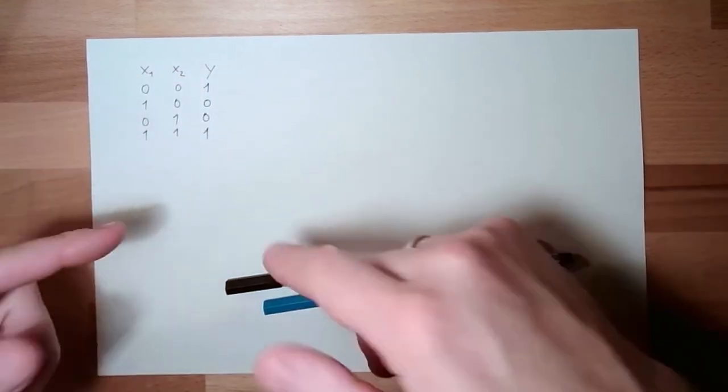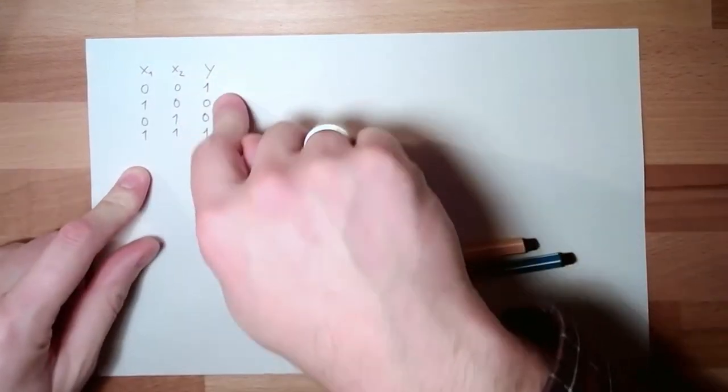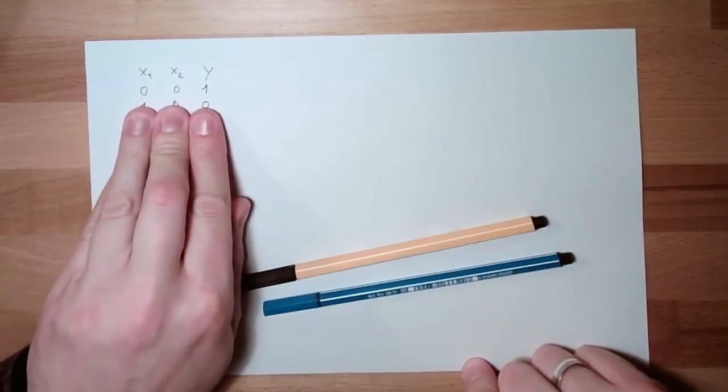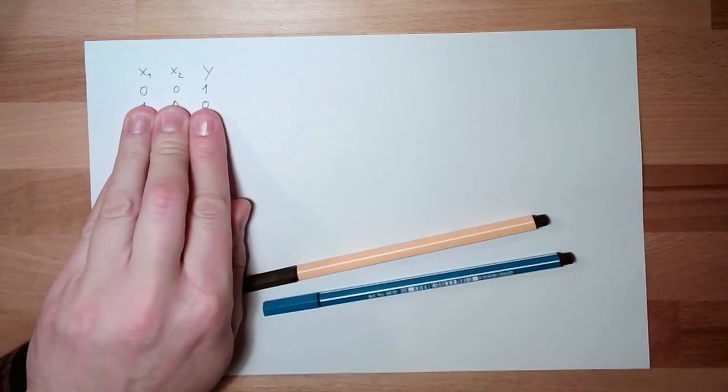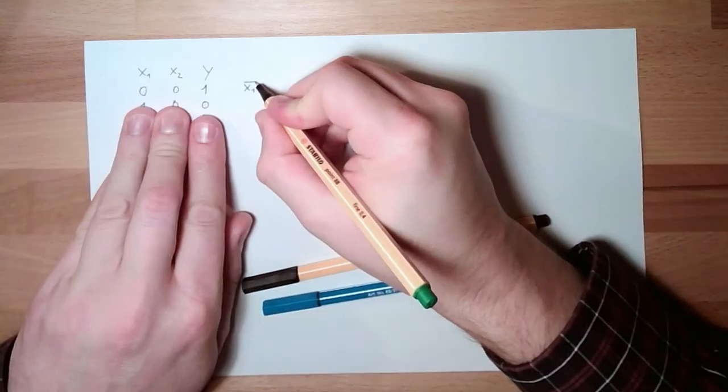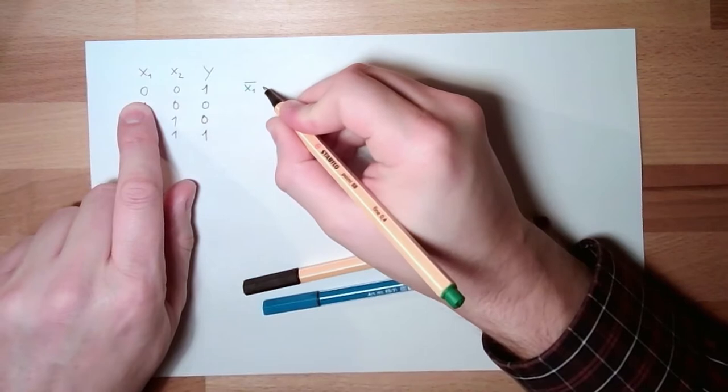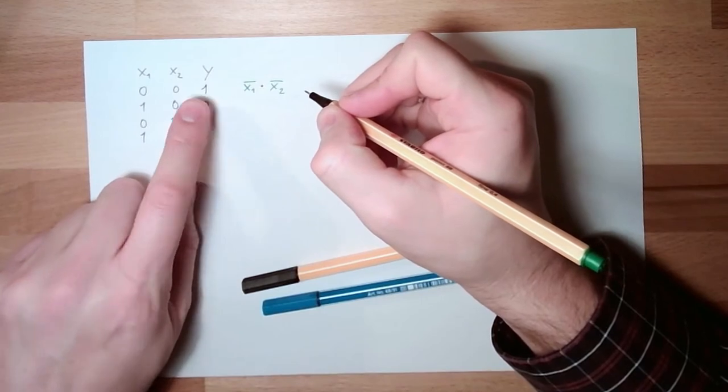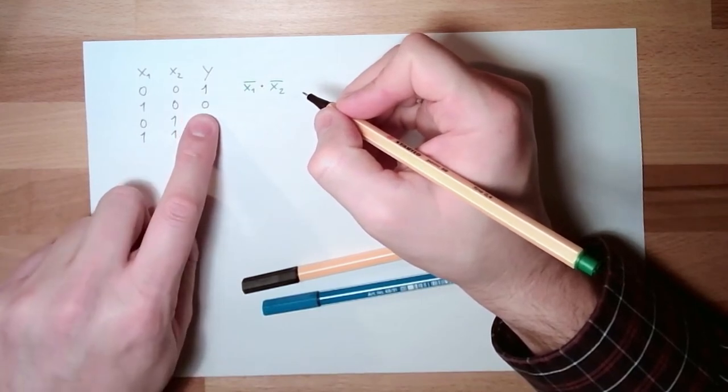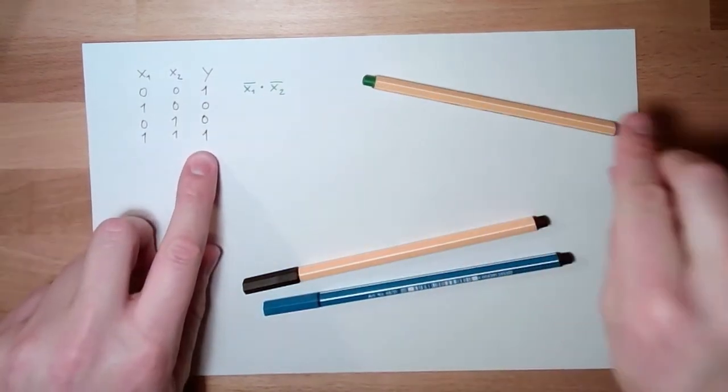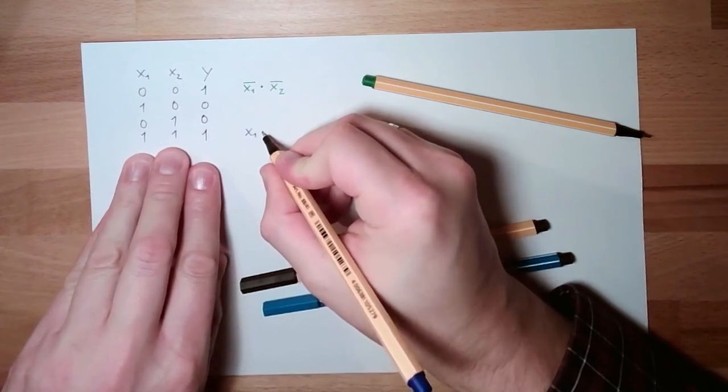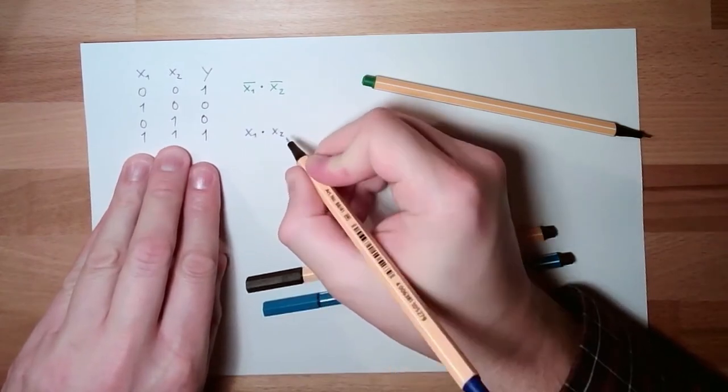So what things need to be met that the output is true? We're looking at it line by line. First line, the output is true. What needs to be met? I need to have x1, not x1, must be 0, and not x2 must also be 0. Then this is 1. Here is 0, nothing. Here is 0, nothing. Here is 1. So I need to have x1 and x1 and x2. Then this is also 1.